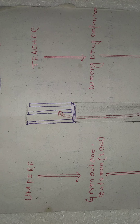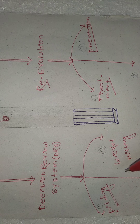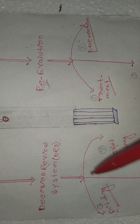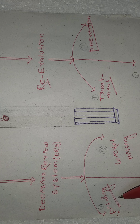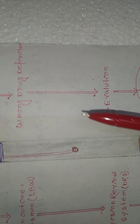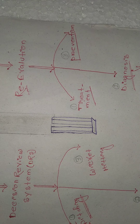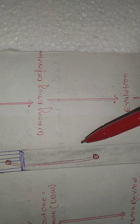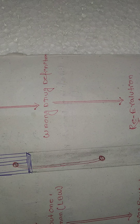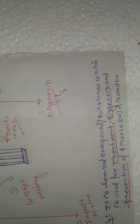To review: if the umpire gives out a batsman and the batsman goes for DRS, the umpire checks pitching, impact in line, and whether the ball is hitting the wicket. Similarly, your re-evaluator will check three things in your paper — whether you have mentioned treatment, diagnosis, and prevention of disease or disorder.